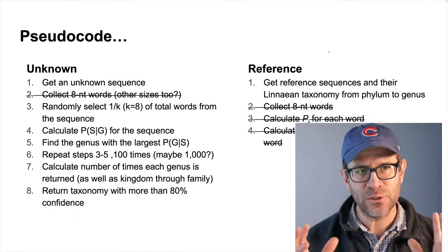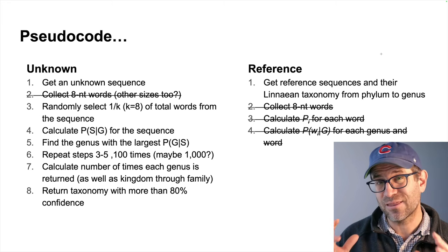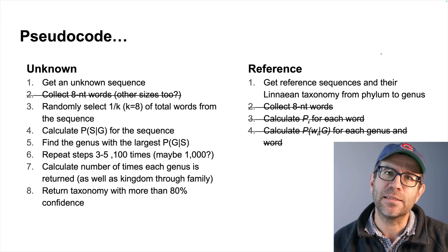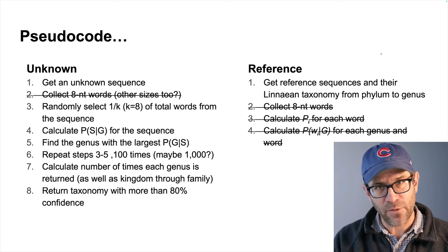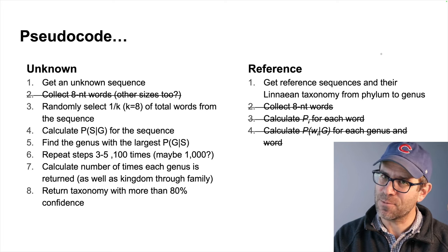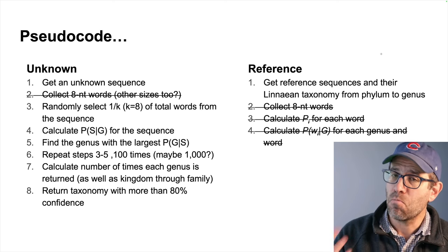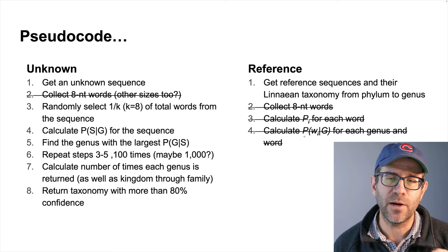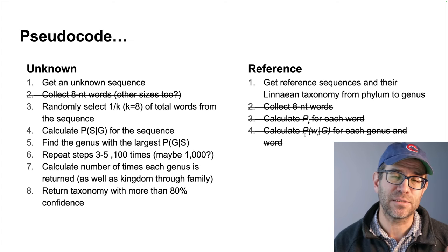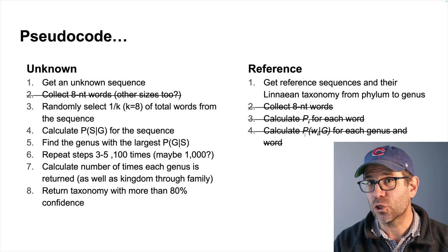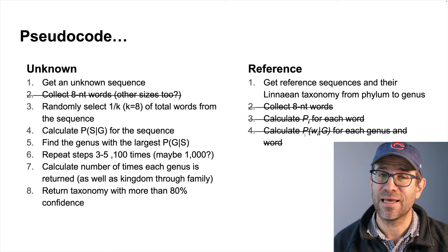In today's episode, we're returning to our pseudocode outline of the general project. I'm continuing to work on the right side of the screen, looking at reference sequences. We're going to have a reference database of k-mer frequencies that will allow us to take an unknown sequence and find which genus has the most similar k-mers. What I want to do today is put it all together in one function — one facing outward toward the user — where they can provide their sequences, taxonomy, and k-mer size, and generate the database.